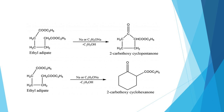1,6-diesters tend to form 5-membered cyclic beta-keto esters, while 1,7-diesters preferentially lead to the formation of 6-membered beta-keto esters. This preference is a result of the inherent stability associated with these ring sizes.